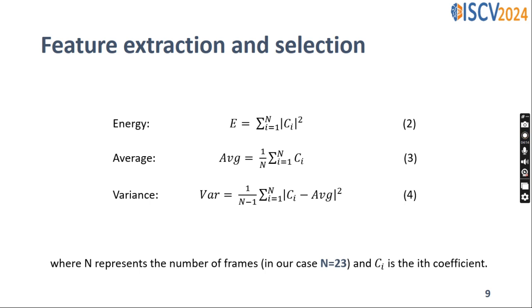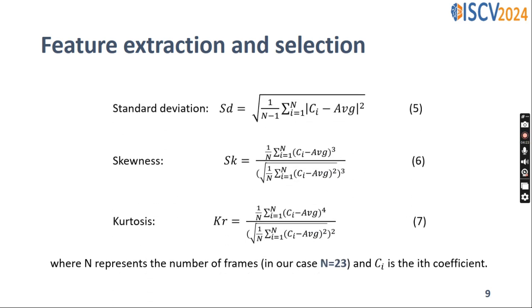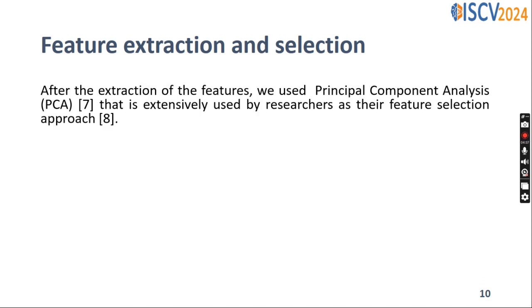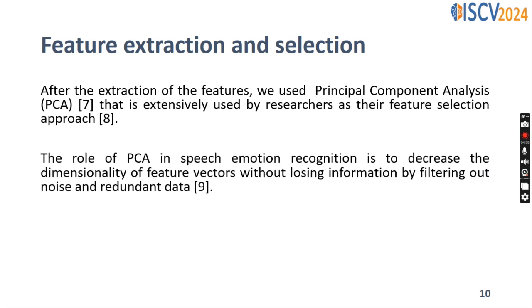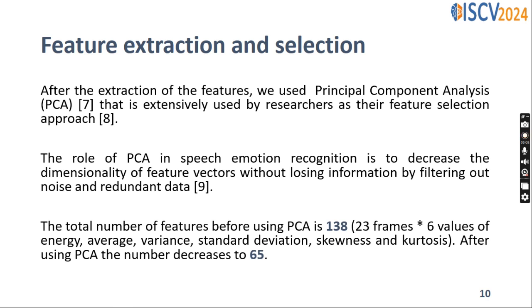After obtaining the coefficients of the wavelet decomposition, the values of energy, average, variance, standard deviation, skewness, and kurtosis are calculated to facilitate the selection of K features. After the extraction of the features, we used principal component analysis, PCA, which is commonly used by researchers as their feature selection approach. The role of PCA in speech-emotional recognition is to decrease the majority of feature vectors without losing information by filtering out noise and redundant data. The total number of features before using PCA is 138, and after using PCA, the number decreases to 65 features.